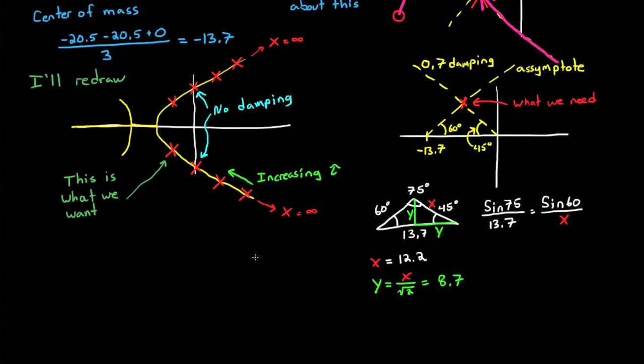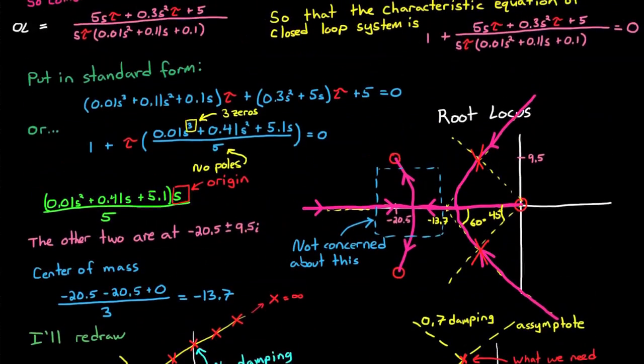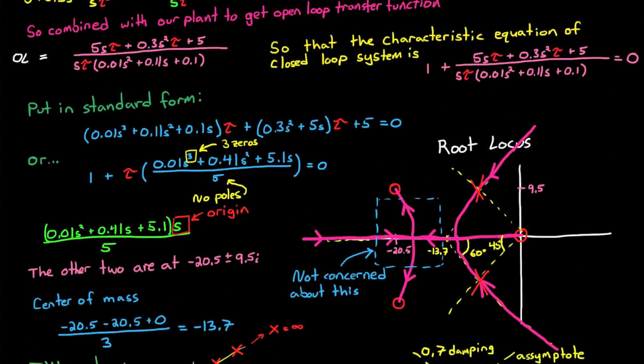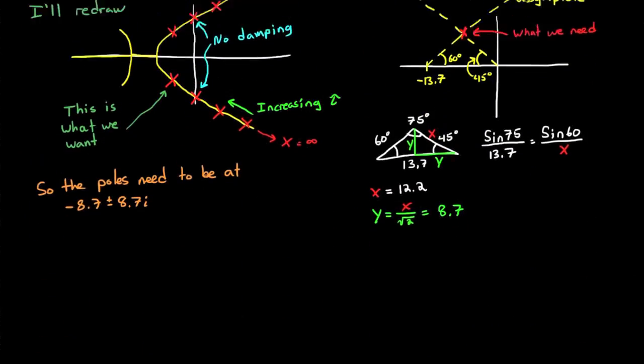Okay, now here's the cool part. We know that where a pole exists, the characteristic equation equals 0, and we also know that the pole here needs to be around minus 8.7 plus or minus 8.7i. So if we plug this pole into our characteristic equation, we can solve for the value of tau required to make it equal 0. And to save just a little bit of writing time, I copied the characteristic equation that we solved for earlier on in this video.